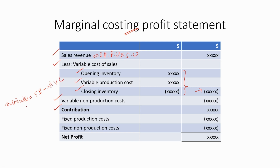So then we can calculate the contribution, which is equal to sales revenue minus all the variable costs. We will discuss about contribution in greater detail in the next slide. Then we deduct the fixed production and fixed non-production costs from the contribution to finally calculate the net profit. This is the standard form for the marginal costing profit statement.